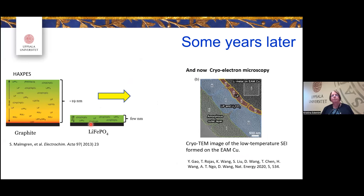What can we do now that we couldn't do before? With cryo-electron microscopy, by cooling down the sample we could see that lithium fluoride and lithium carbonate are spread throughout the SEI — similar to what we had said earlier in 2001 and 2013 — but now with much better resolution and techniques that allow us to penetrate the SEI in more detail.